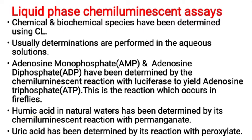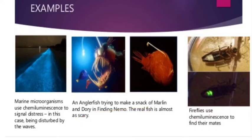Humic acid in natural waters has been determined by its Chemiluminescent reaction with permanganate. Humic acid from natural water sources reacts with KMnO4 (potassium permanganate), producing a product and emitting a photon (Chemiluminescence). Another example: uric acid has been determined by reaction with peroxylate. Uric acid reacts with peroxylate, forming a product and emitting light. All these are examples of liquid phase Chemiluminescent reactions.